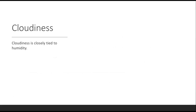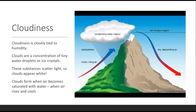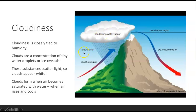Cloudiness is closely tied to humidity. Clouds are a concentration of tiny water droplets or ice crystals, and those substances scatter light — that's why clouds appear to be white. Clouds form when air becomes saturated with water, and then the air rises and cools. If you go to a mountainous region, on the wind side — the side where the wind is blowing into the mountain — you'll get a lot of rain and cloud cover, because the air hits the mountain, rises, cools, and condenses into clouds, then rains down through precipitation.